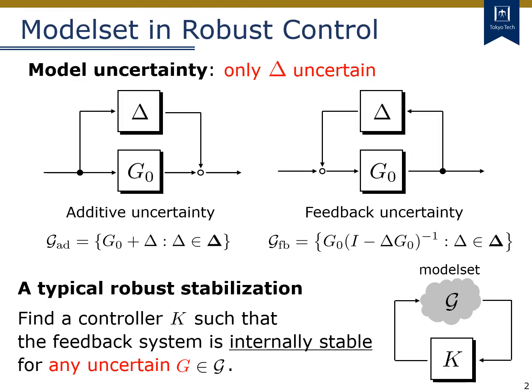First, let's review the model set-based analysis in robust control. The robust control theory is a control theory which can handle model uncertainty, as shown in these block diagrams. Here, G0 represents the nominal plant model which does not have any uncertainty, while delta represents the uncertainty of the plant model.